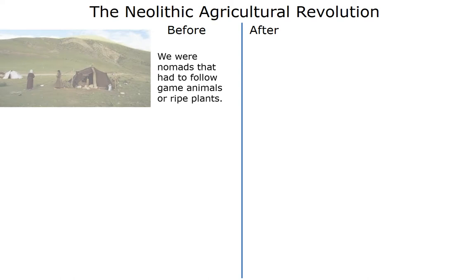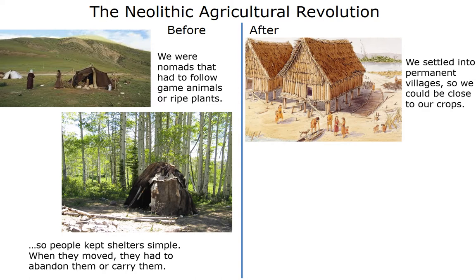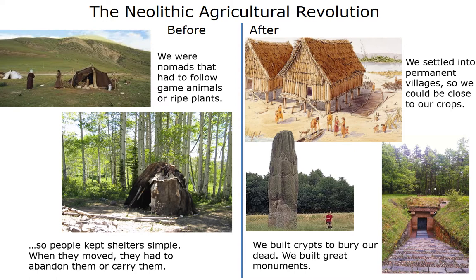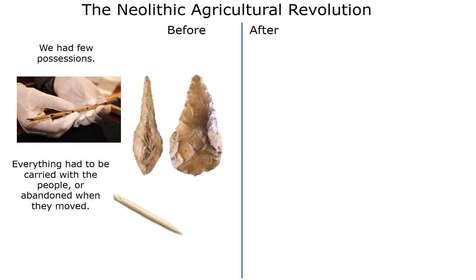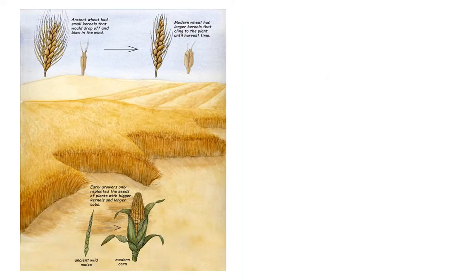Before the Agricultural Revolution, we were nomads that had to follow game animals or ripe plants, so people kept shelters simple. When they moved, they had to abandon them or carry them. After, we settled into permanent villages so we could be close to our crops. We built crypts to bury our dead and great monuments. Before, we had few possessions — everything had to be carried or abandoned when people moved. After, we could accumulate many more things, and so we invented many more things.